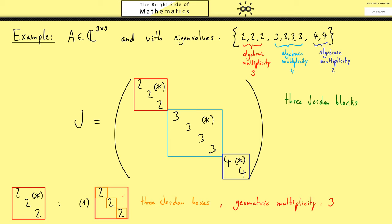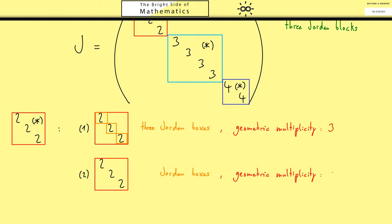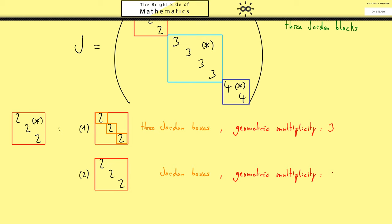Hence you might have already guessed that we find different cases for different geometric multiplicities. The next case would be geometric multiplicity of 2, which already means that we just have 2 Jordan boxes. Please note, from the geometric multiplicity we only know the number of the boxes, not the size. But here we don't have any choice — we know we can have one box of size 2 and one of size 1. Of course we could change the order of the boxes, but this would be essentially the same, so normally we would ignore the order.